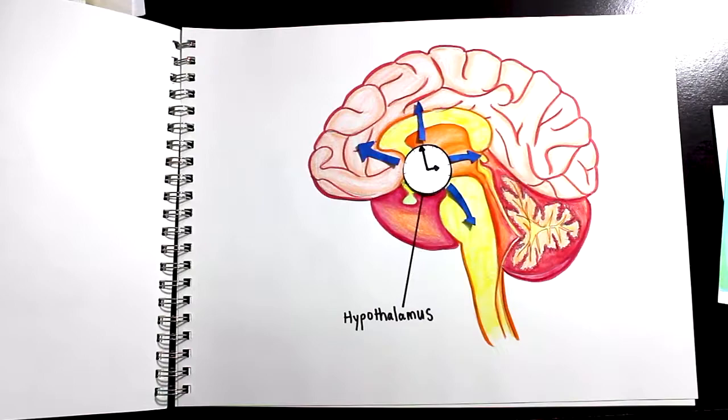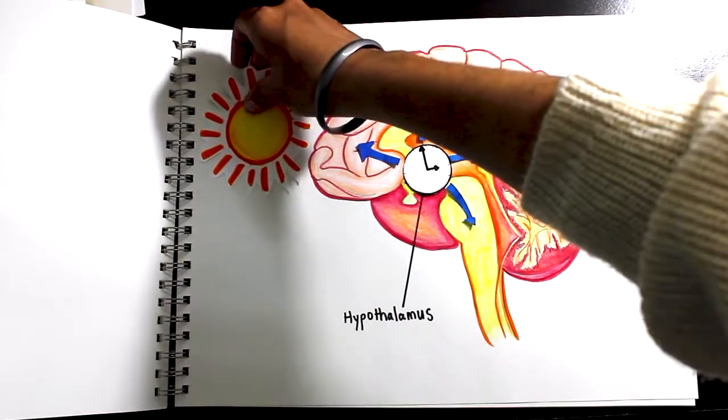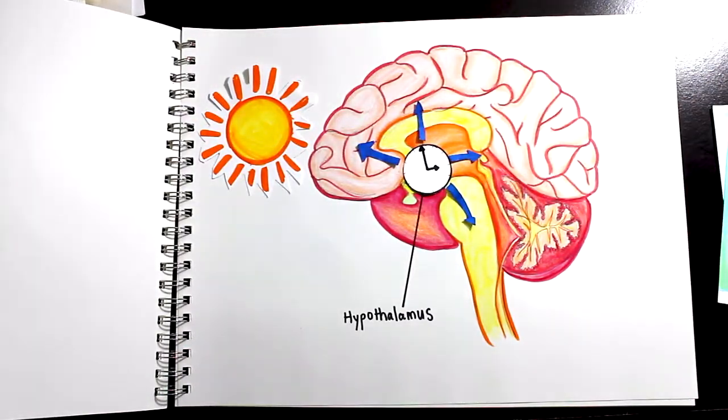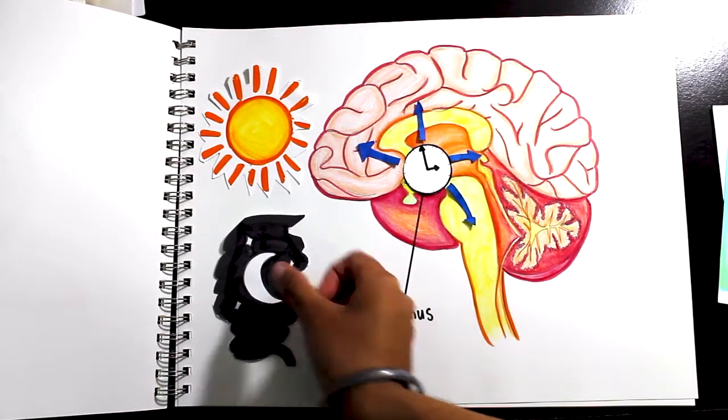Your clock is made of cells that send signals to the rest of your brain to let your brain know if it is day or night.